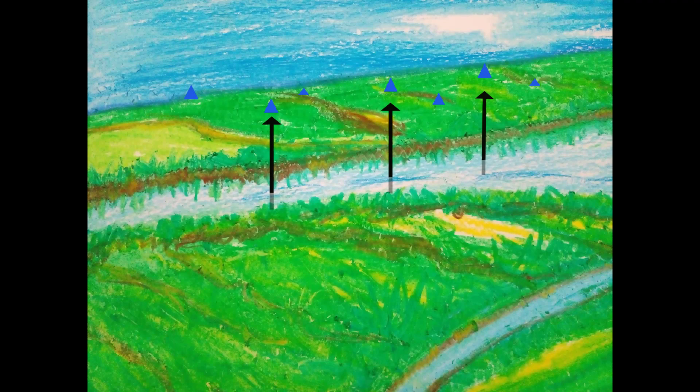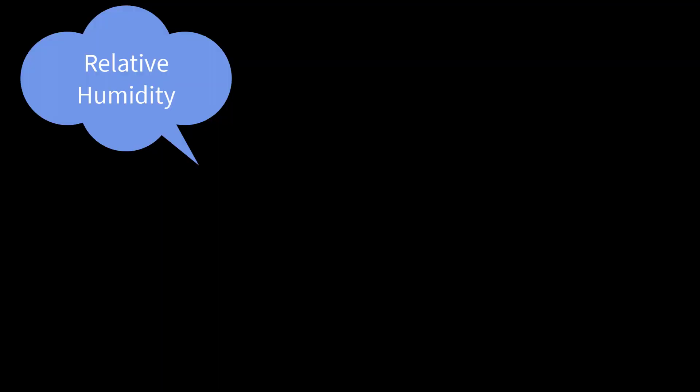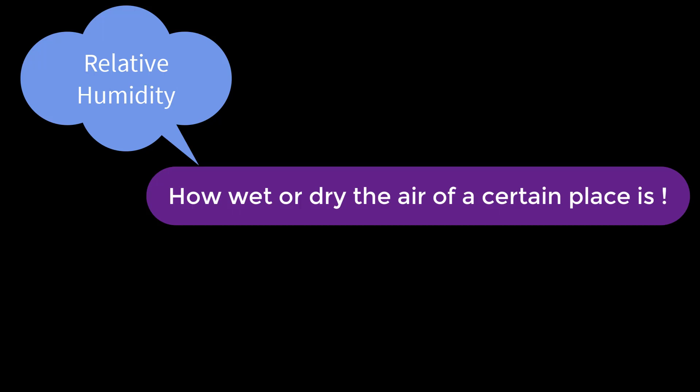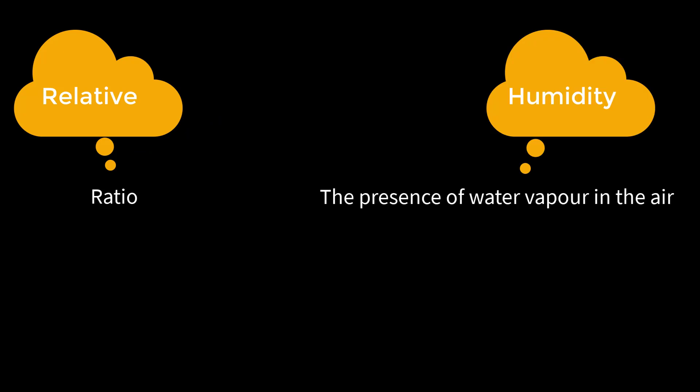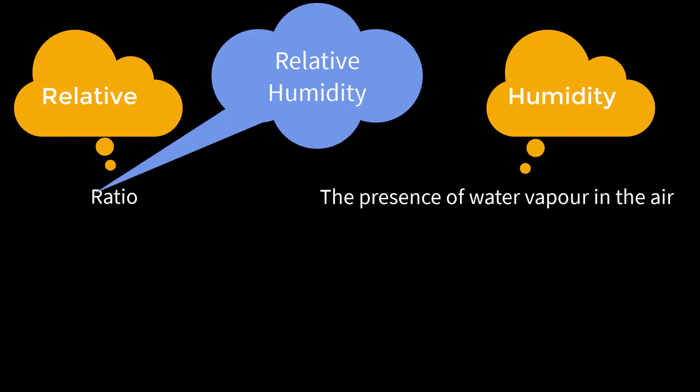So we can say that humidity is nothing but moisture — the water vapor present in the atmosphere. Relative humidity means how wet or dry the air of a certain place is. 'Relative' means ratio and 'humidity' means the presence of water vapor in the air. Therefore, relative humidity is the ratio of water vapor, denoted as capital R, and generally expressed as a percentage.